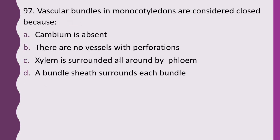Question 97. Vascular bundles in monocotyledons are considered closed because: cambium is absent; there is no vessel with perforation; xylem is surrounded all around by phloem; or a bundle sheath surrounds each bundle. The correct answer is option A, because the cambium is absent.